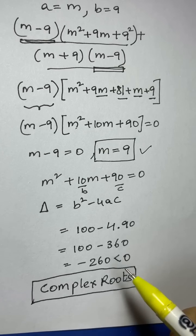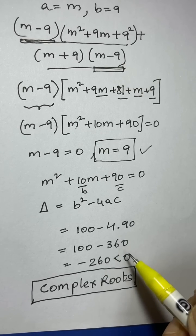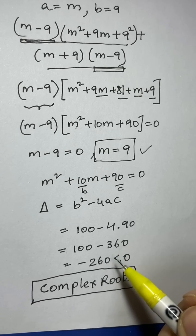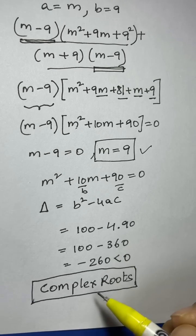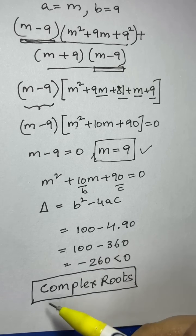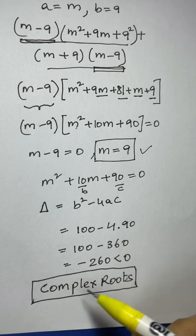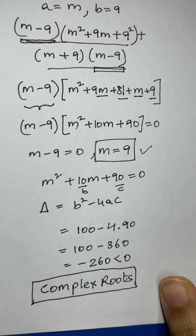When the discriminant is less than zero you have complex roots, not real roots. If it equals zero you have one real root, and if it's greater than zero you have two real roots. Here it's less than zero, so we have two complex roots.